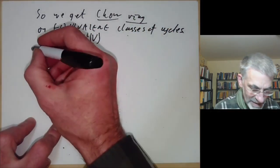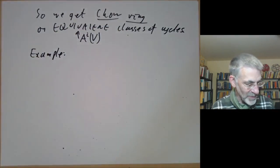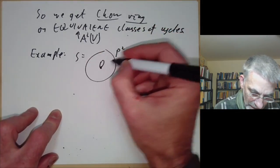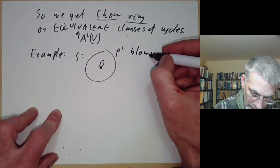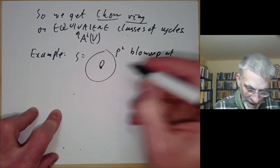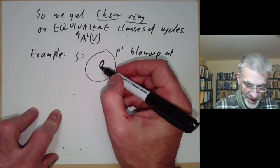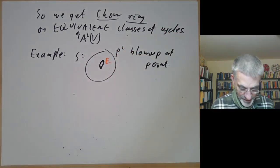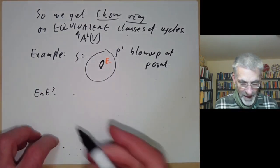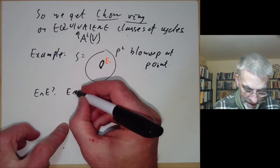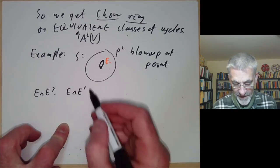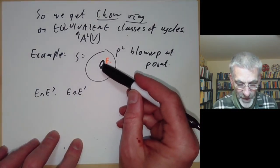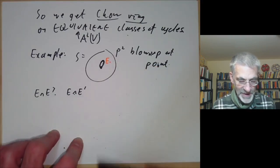This is actually a little bit subtle. Let's illustrate Chow's moving lemma by taking S to be the surface P² blown up at a point. We have a little copy of P¹ on this blown-up surface, which is the exceptional curve, usually denoted E. Suppose we try working out the intersection number of E with itself. First, we have to move E slightly to some other curve E'. The problem is you can't do this — exceptional curves can't actually be deformed, they're rigid. So this seems to be a counterexample to Chow's moving lemma.